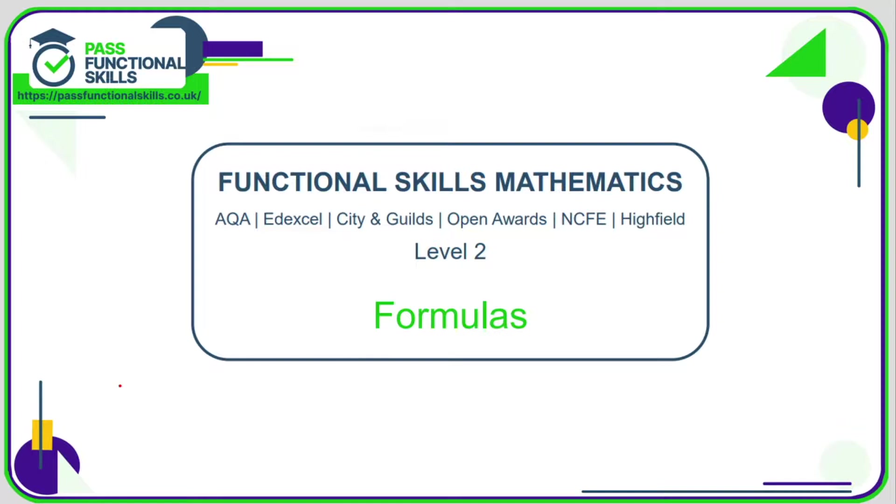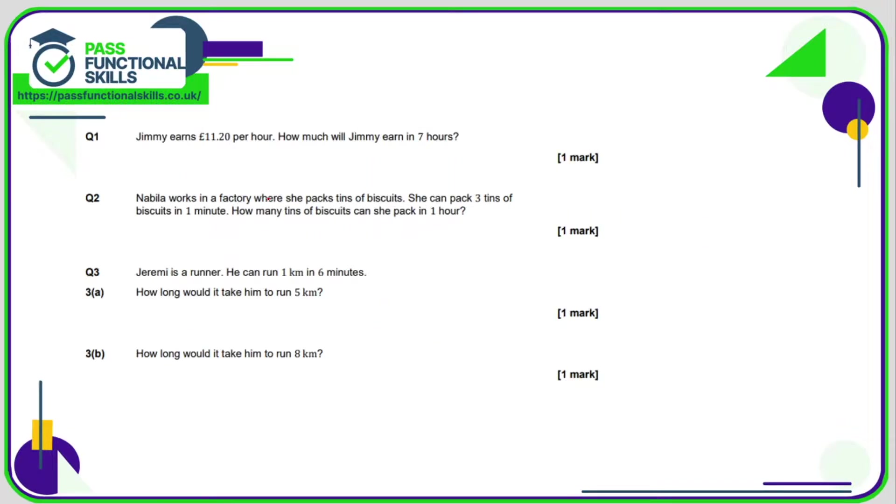Let's take a look at these formulas questions. They are all calculator questions apart from questions two and three. Question number one: Jimmy earns £11.20 for every hour he works, so if he works for seven hours he's going to earn £11.20 multiplied by seven. On your calculator just type in 11.2 or 11.20, multiply that by seven. Your calculator will give you the answer 78.4. Hopefully you can turn that into a price which is £78.40.